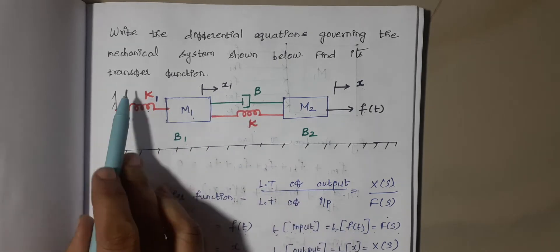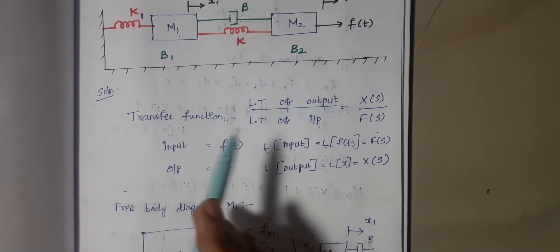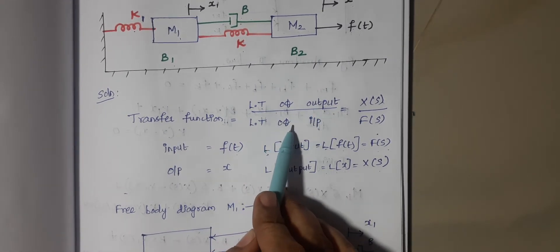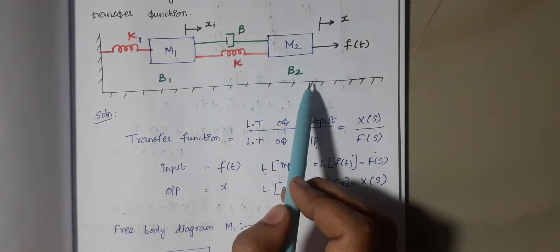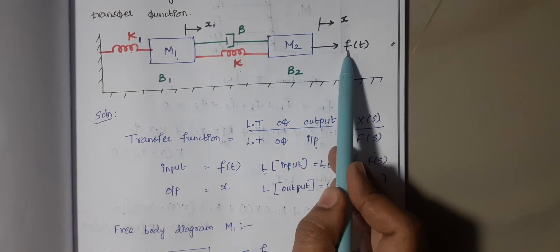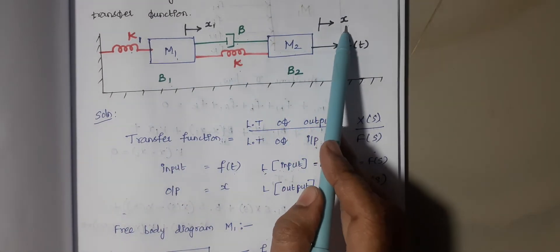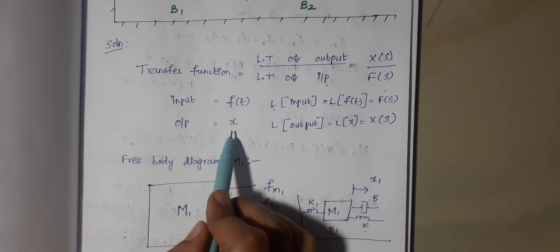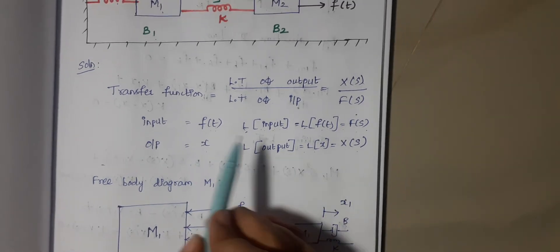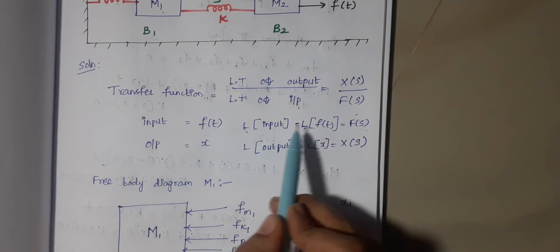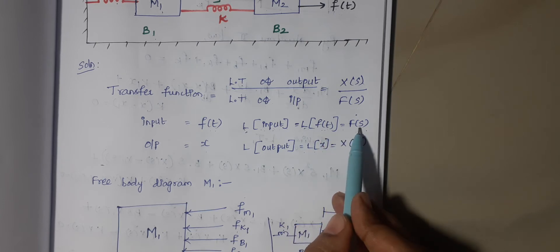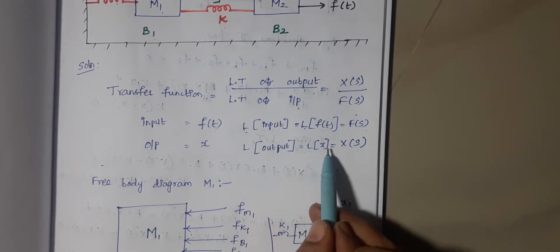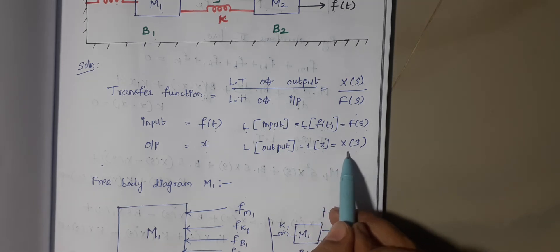To find the transfer function — the transfer function is nothing but the Laplace transform of output to the Laplace transform of input. From this diagram, f(t) is the input and the respective displacement is the output. So input is equal to f(t) and output is equal to x. When you take the Laplace transform, f(t) becomes F(s) and the Laplace transform of x is X(s).